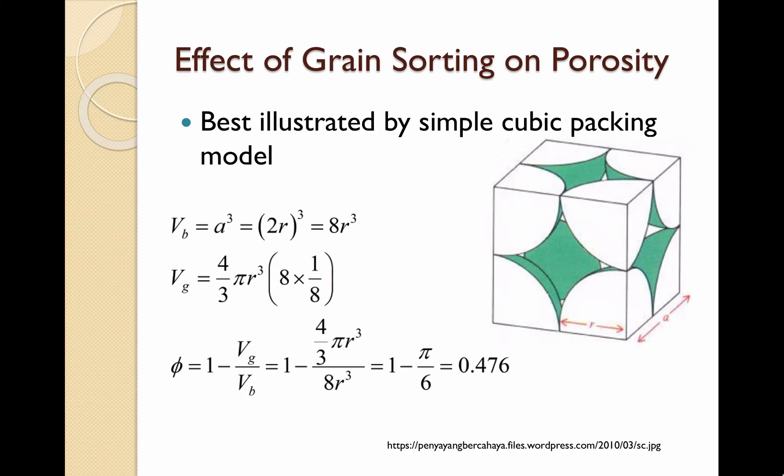Taking a look at the most simple packing model, a standard cubic packing, we will show how the porosity is derived. Using the letter A to represent the unit width of the cube or bulk, and using R for the radius of each atom, we are able to construct an equation for porosity. First, it is important to get an equation for the side of the bulk volume, A, in terms of the radius. For simple cubic, A is equal to 2R, which will give the bulk volume, 8R cubed.